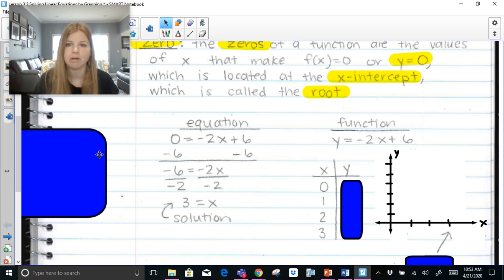But let's say you went ahead and we wanted to graph this function. So instead of 0 equals and solving the equation, what if I replace that 0 with y and I graphed it? Now, one of the methods of graphing is simply making a table. So if I made a table of x values 0, 1, 2, 3, and I started substituting them in to get my y. So let's see, -2 times 0 is 0, plus 6 is 6.